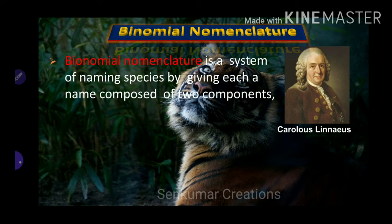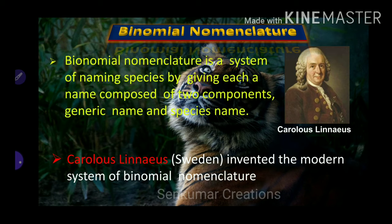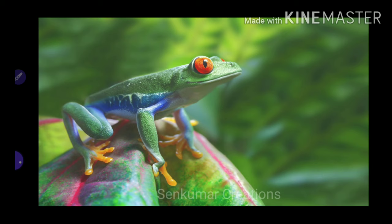Binomial nomenclature is a system of naming species by giving each a name composed of two components: the generic name and the species name — that is, genus name and species name. Carlos Linnaeus, the scientist from Sweden, invented the modern system of binomial nomenclature.